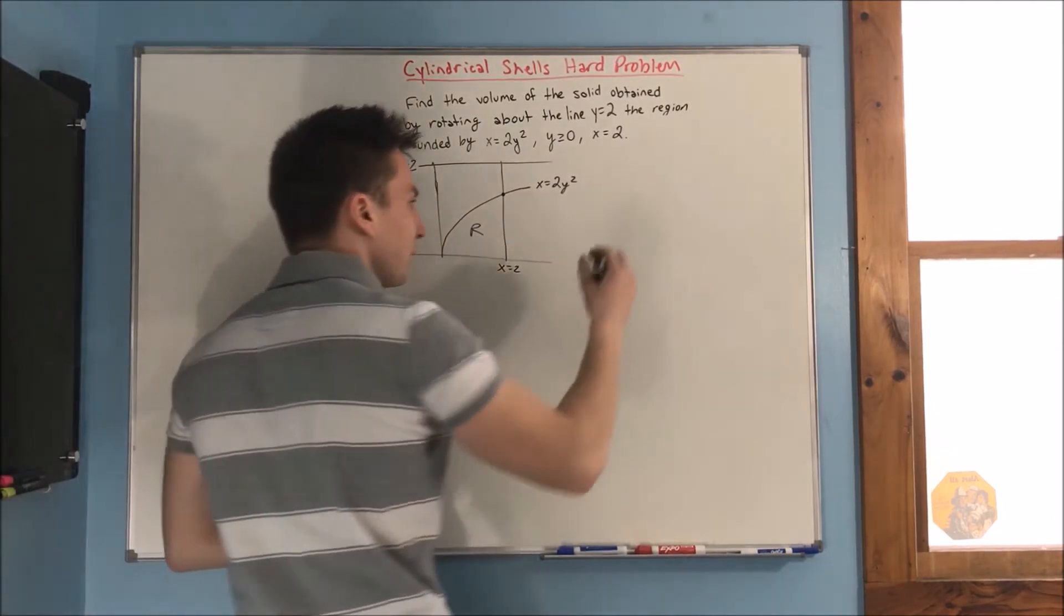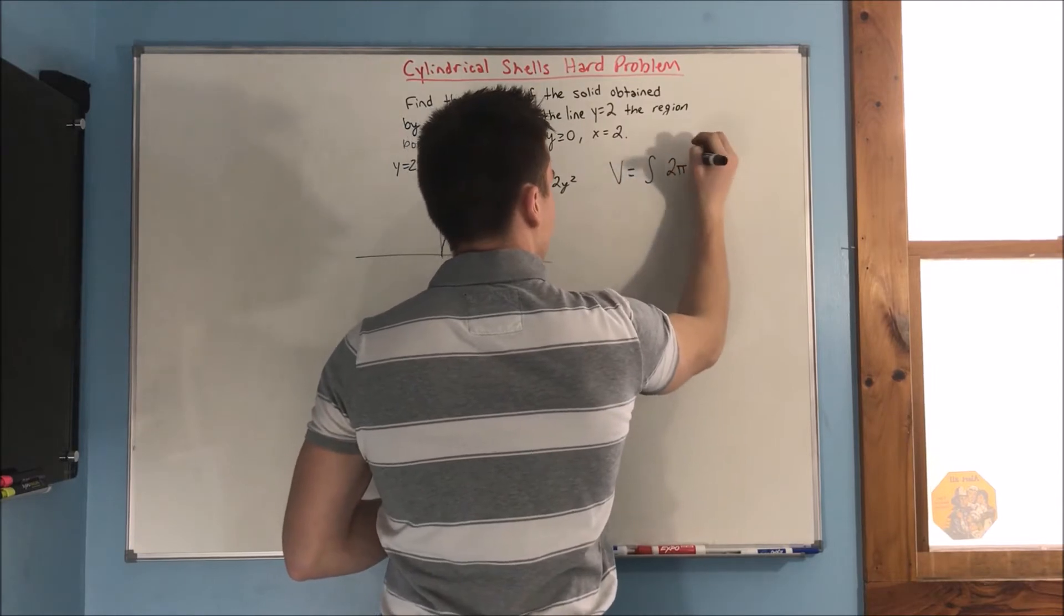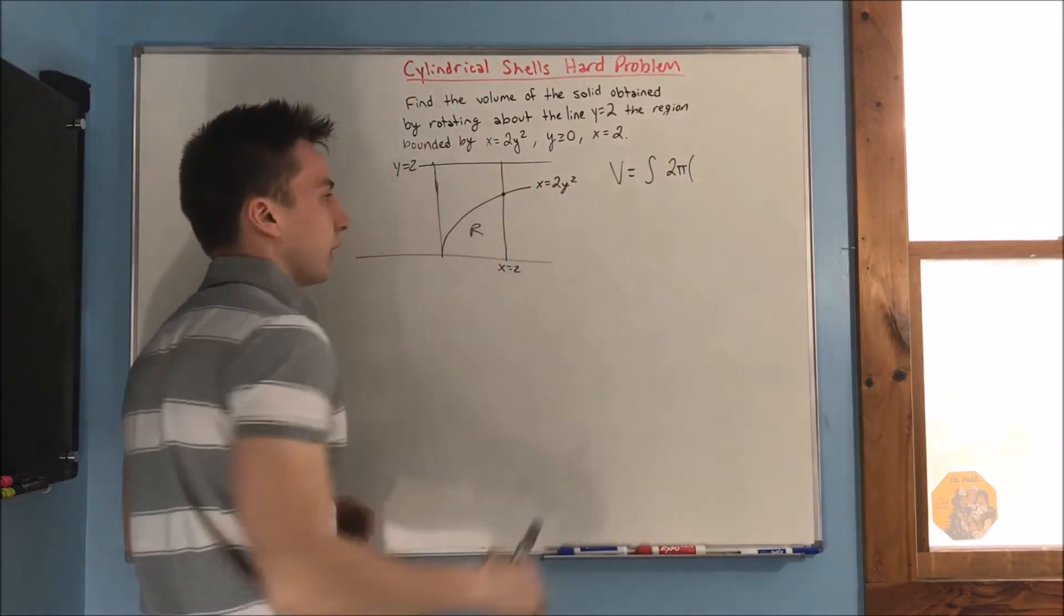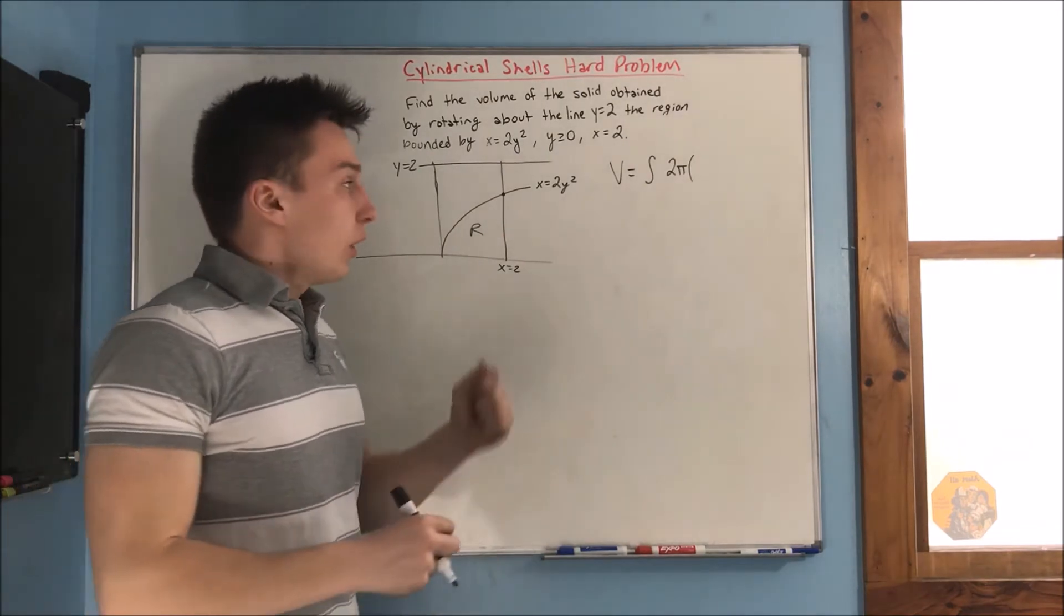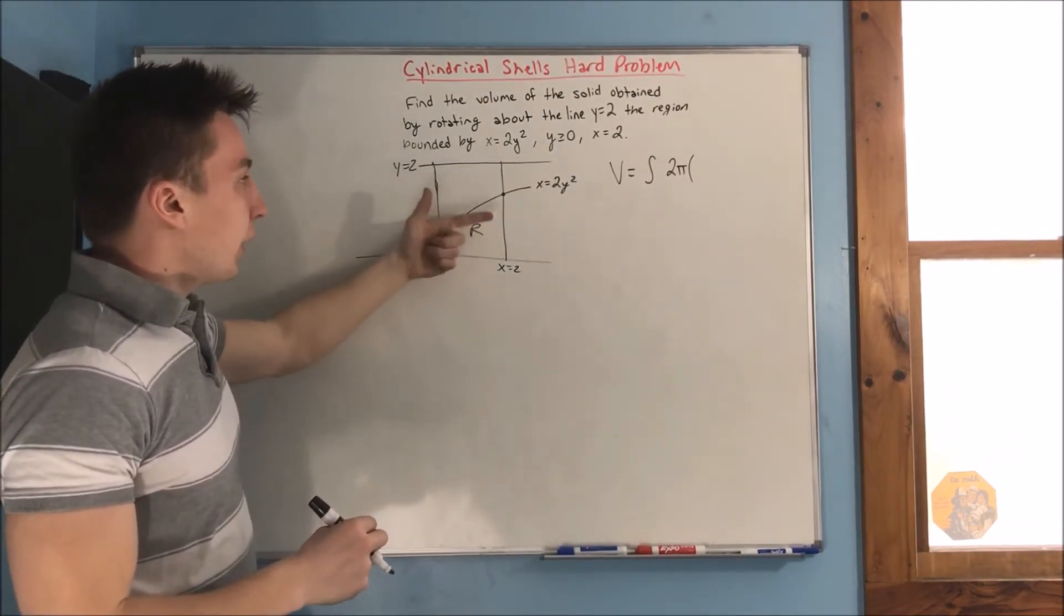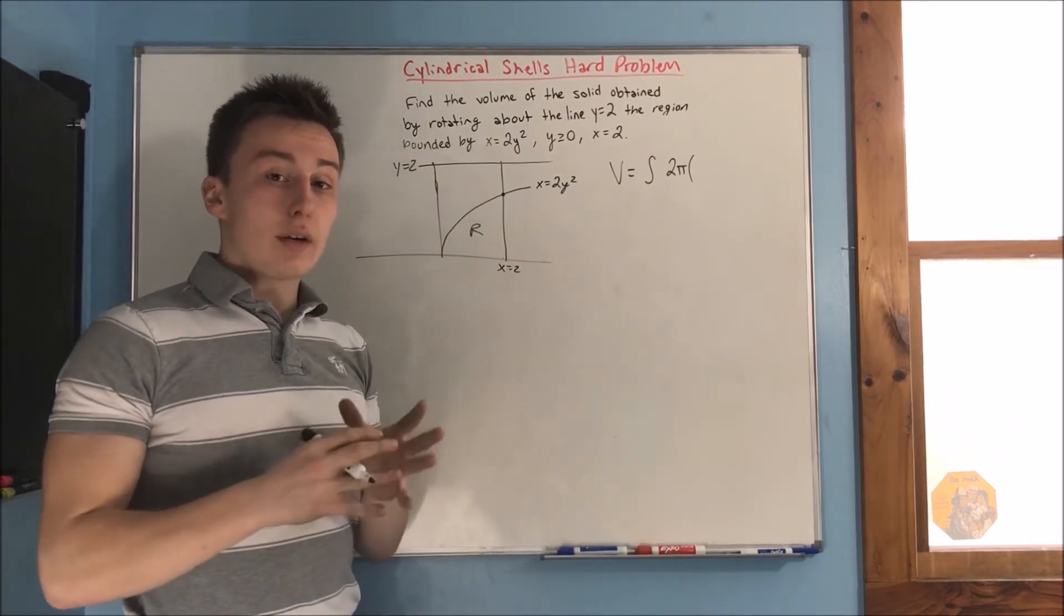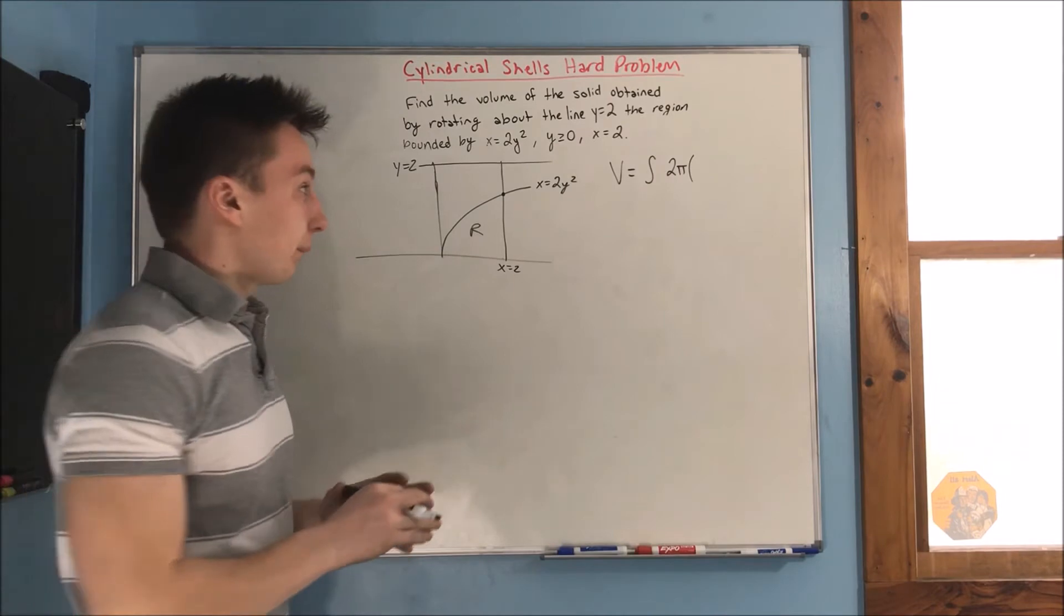So, what's our equation? Volume is equal to the integral, 2 pi, we'll start off with our circumference there, but we need to figure out our balance, alright? Well, since we are revolving this region around a horizontal line, okay, we know we're going to be integrating with respect to y. Okay?